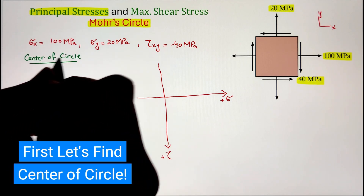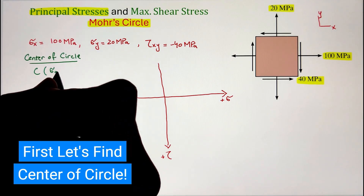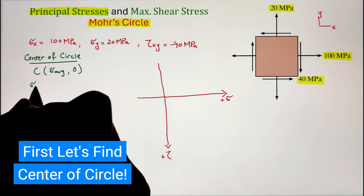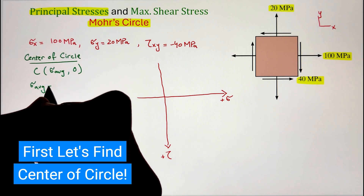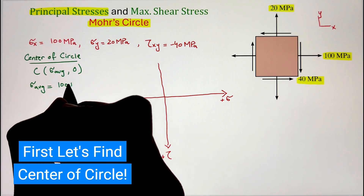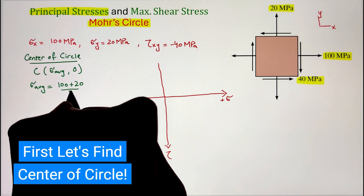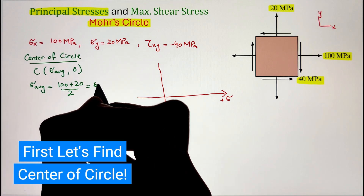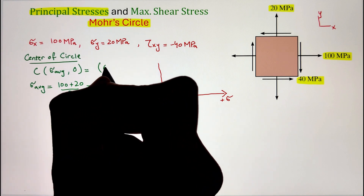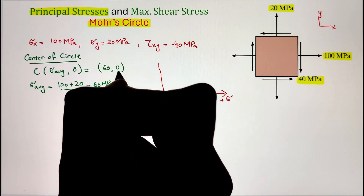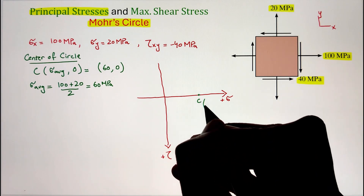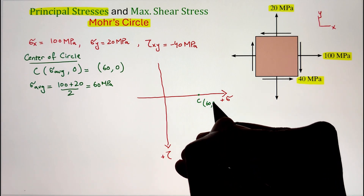Once we have the axes, let's go ahead and identify the center point of the circle. The center point coordinates are given as sigma average comma 0, meaning the average normal stress is the center point, whereas the shear stress equals 0 where the center point lies. In this case, the average value of normal stress is coming as 60 megapascal, so we can identify that point on our graph and mark it as C.